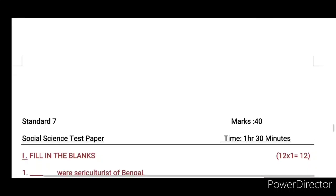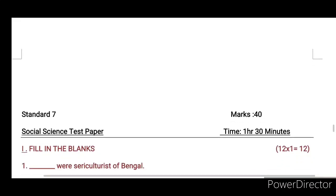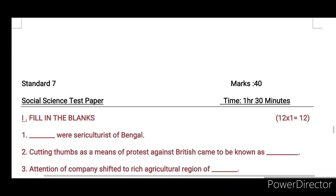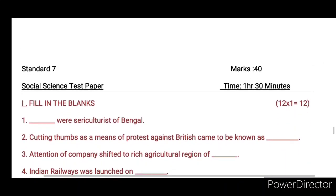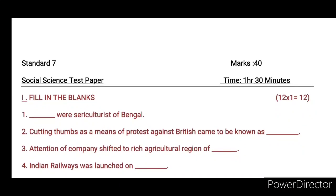First section: fill in the blanks. One question, one mark, 12 questions total. First one: dash — worthy sericulturist of Bengal. Second one: cutting thumbs as a means of protest against the British came to be known as dash.